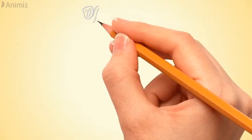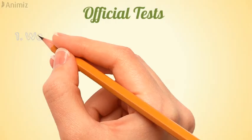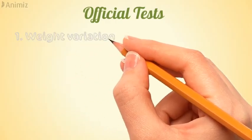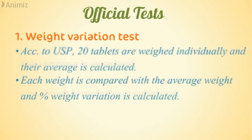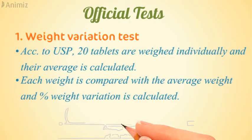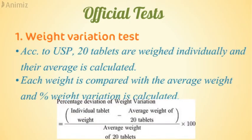Now for the official tests. The first is the weight variation test. According to USP, 20 tablets are weighed individually, their average weight is calculated, and each weight is compared with the average to calculate percent weight variation.